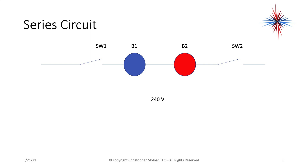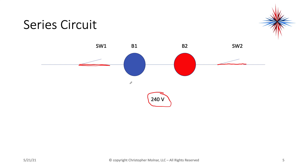This is an example of a series circuit. If switch one or switch two is open, there's no longer a path. If I close switch one but switch two is still open, I don't have a full path — voltage is going to stop at switch two. If I close switch two, B1 and B2 will operate, but neither gets full 240 volts; it's split between the two. There's only one path for current to flow.